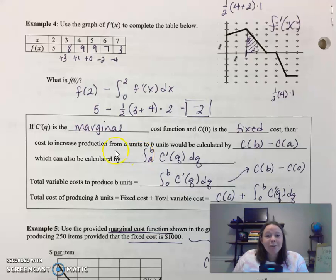So if you have the marginal cost function and you want to know the total cost of producing those number of items, if you don't have the original cost function and you have the marginal cost, you can now use the definite integral to help you with that.